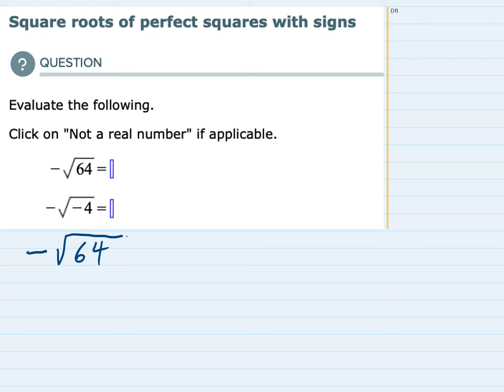So the square root of 64 is asking what number times itself is 64 and we can simplify that square root of 64 to become 8.